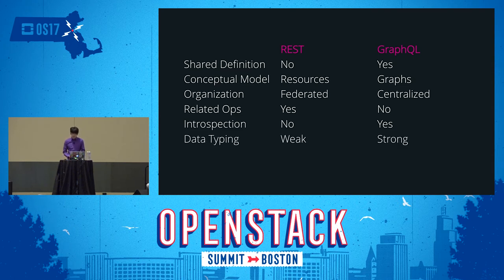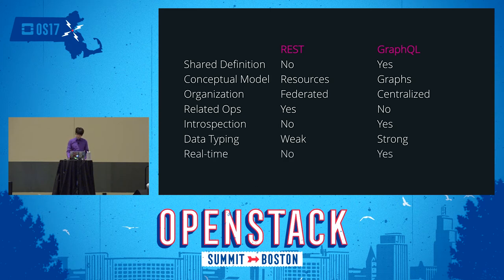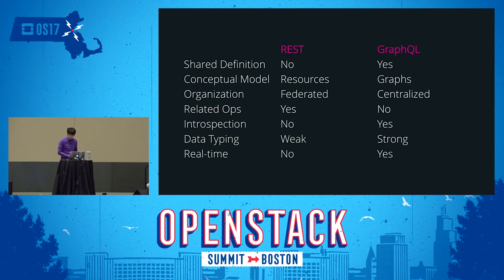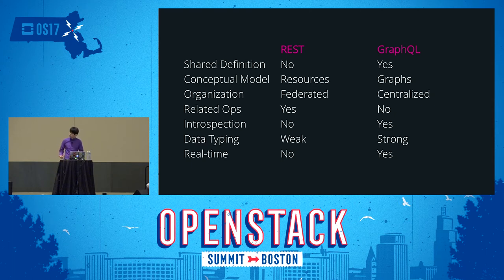Introspecting REST APIs in a standard way is difficult — maybe something resembling a sitemap, but it's not mentioned in the REST constraints so implementations immediately lack standardization. As a result of introspection, GraphQL features strongly typed inputs and outputs. REST has a hard time pulling this off partly because of the decentralized approach. Regarding real-time data: REST's stateless protocol constraint makes it difficult to build efficient push-based APIs, whereas GraphQL via subscriptions makes real-time data a first-class use case, though subscriptions are stateful and add complexity to the infrastructure.